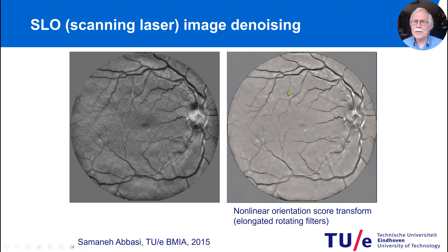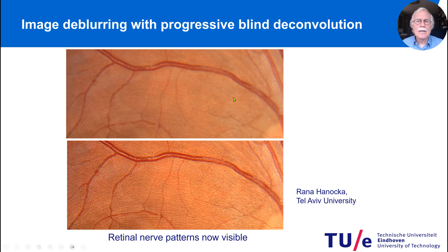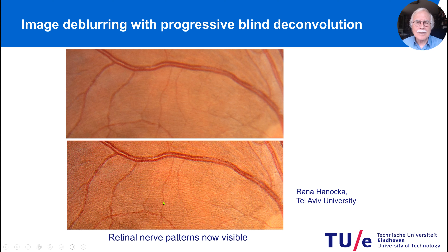Second, because we work with laser light and don't want to damage the retina, this is very dim laser light, which leads to noisy images. But you can very nicely clean the images and remove the noise. We did this with a non-linear orientation score transform — in fact, elongated rotating filters. We also did image deblurring to make them as sharp as possible, collaborating with Tel Aviv University using a blind convolution technique. Now you can even see the tiny patterns of the nerve fibers going to the optic disc in the sharpened image.